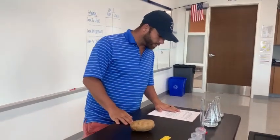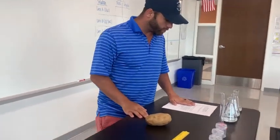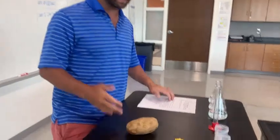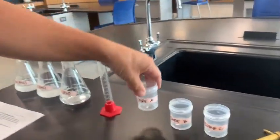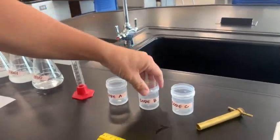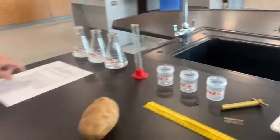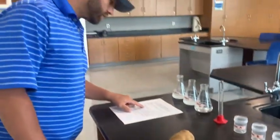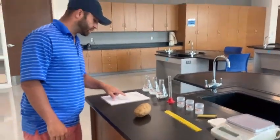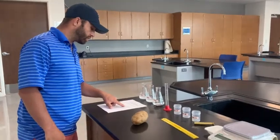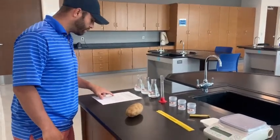It says label each sample bottle with your names and either core A, B, and C. Since it's just me, I went ahead and labeled core A, core B, core C. Very simple. Then using a potato core, I'm gonna cut three cores at least three centimeters long and place one in each bottle.